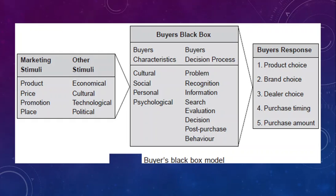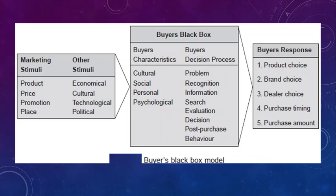The internal factors affecting consumer decisions are described as the black box. So the external factors come from the company and other environmental influences, while the buyer's black box represents the internal factors which affect consumer decisions. This is why it is described as the black box or the customer's mind. It contains factors that exist in the person's mind, including characteristics such as needs, beliefs, values, motivation, and lifestyle.